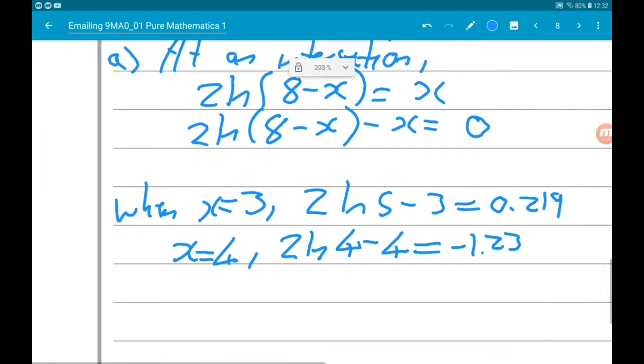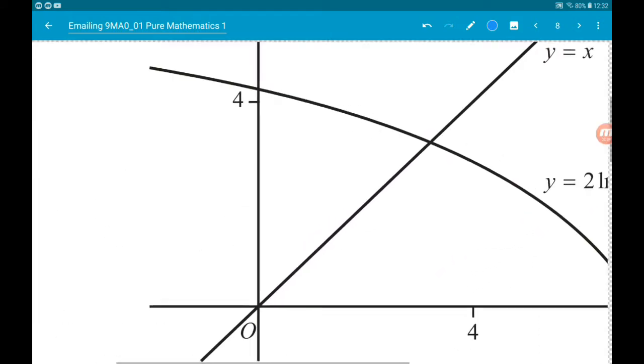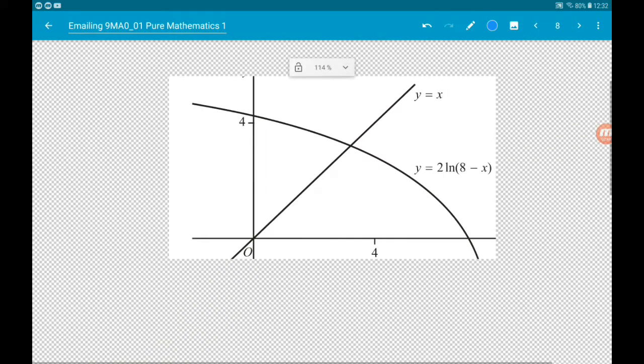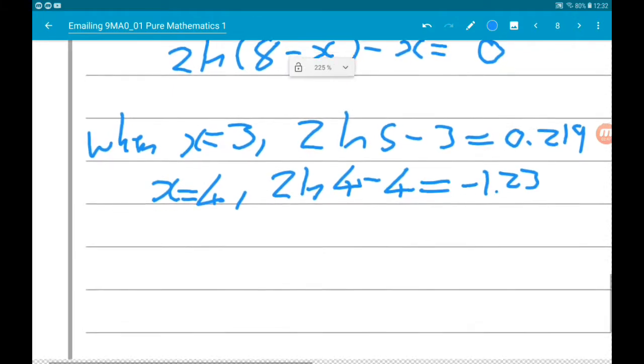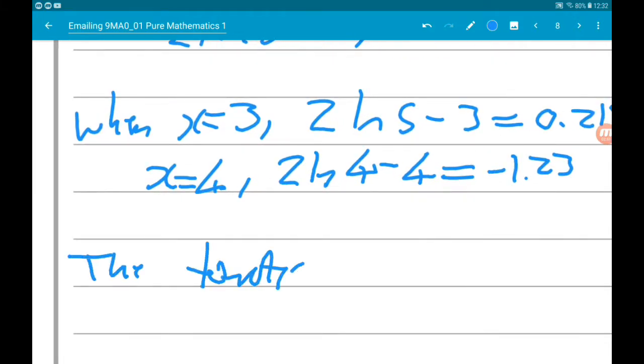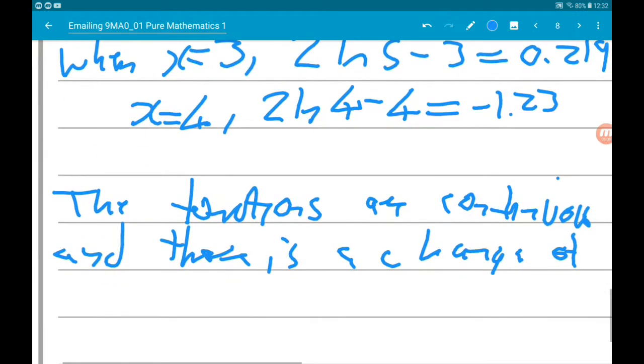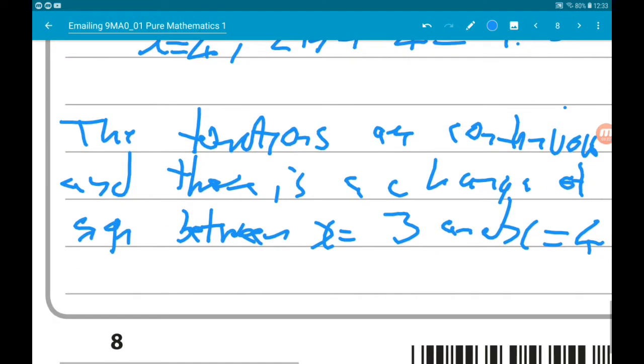So we do have a change of sign. Now we're at A level so we also need to be a bit more thorough. So here we can see that the functions are both continuous in the interval. The functions are continuous and there is a change of sign between x equals 3 and x equals 4, so there is a root in the interval.